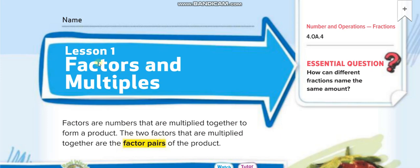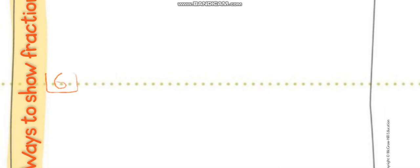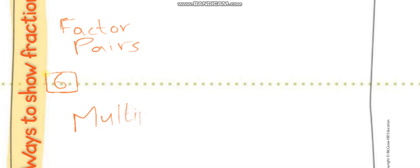Before starting this lesson, you have to understand the difference between factors and multiples — specifically factor pairs and multiples. Let me show you here on the white screen. For example, if I give you a number, let's say 6, and ask you to give me the factor pairs of 6 and the multiples of 6.